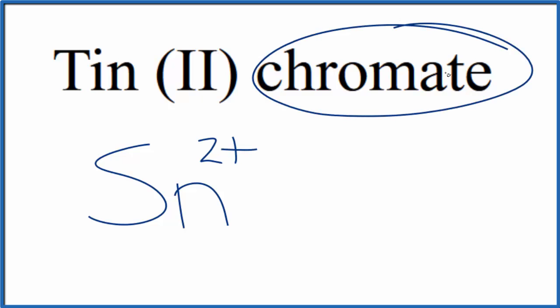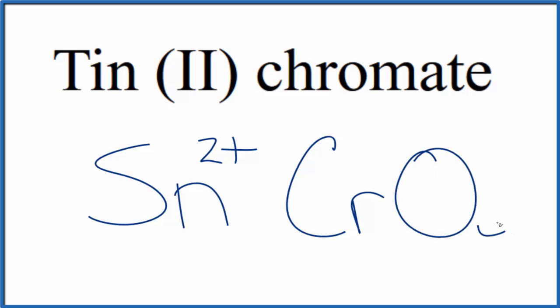you're not going to find that on the periodic table. It ends in -ate. This is a polyatomic ion. So you either memorize that the chromate ion is CrO4 with a charge of 2-, or if you're allowed, you look it up on a table of polyatomic ions.